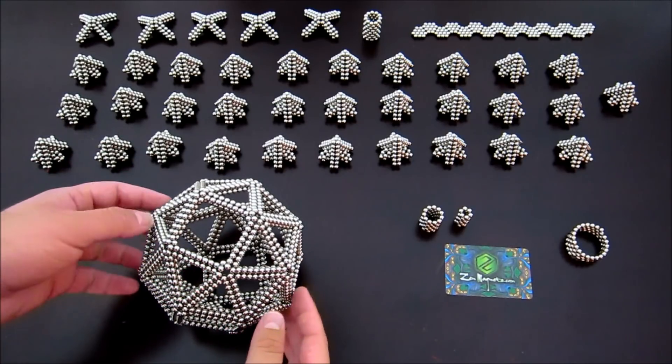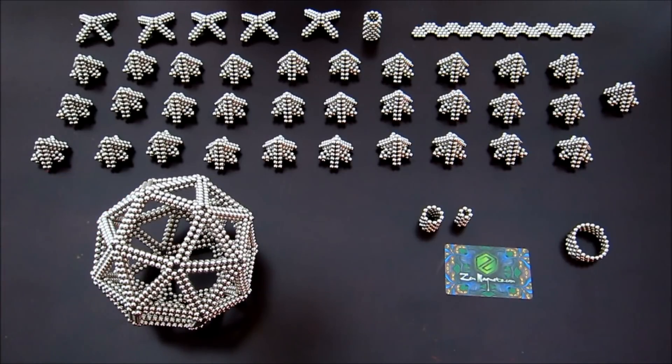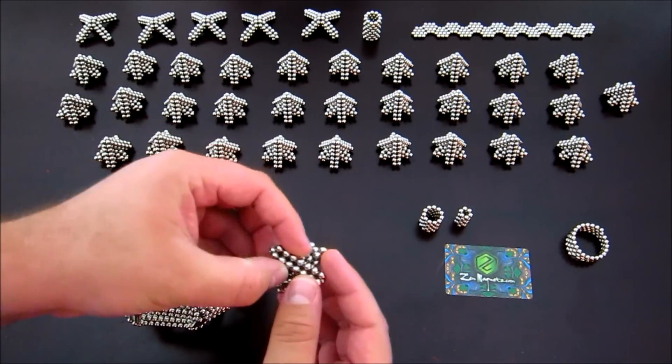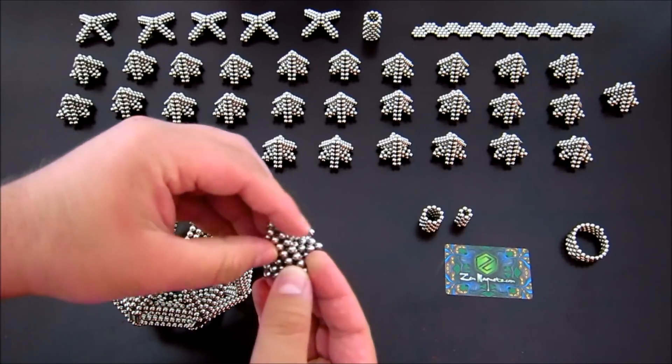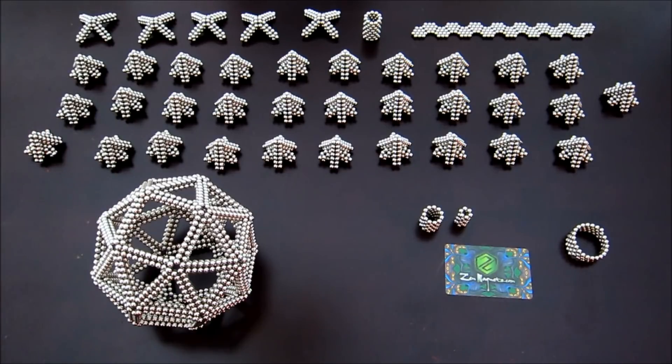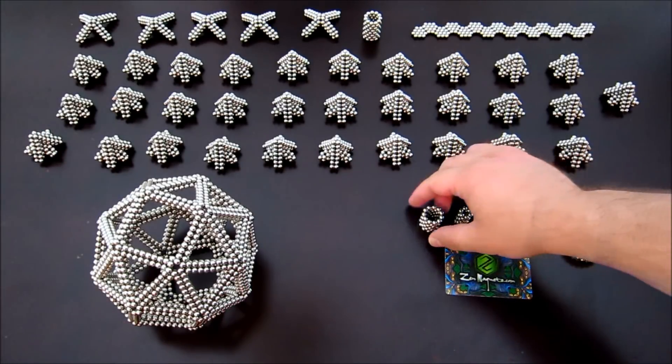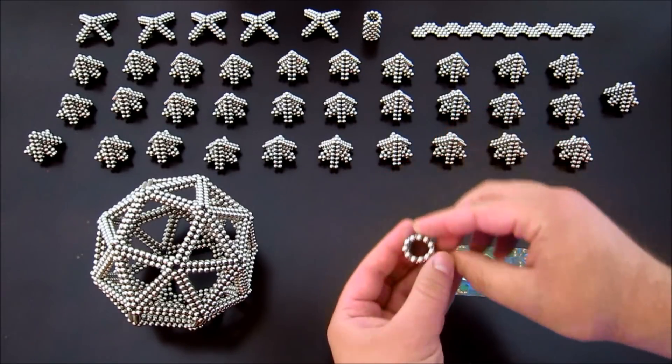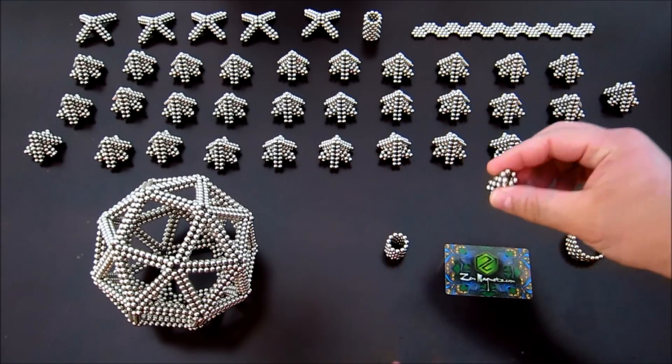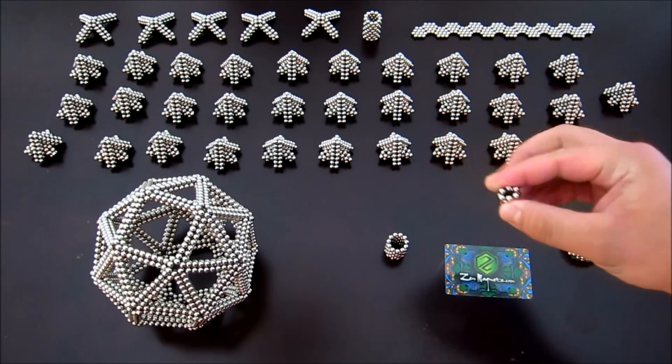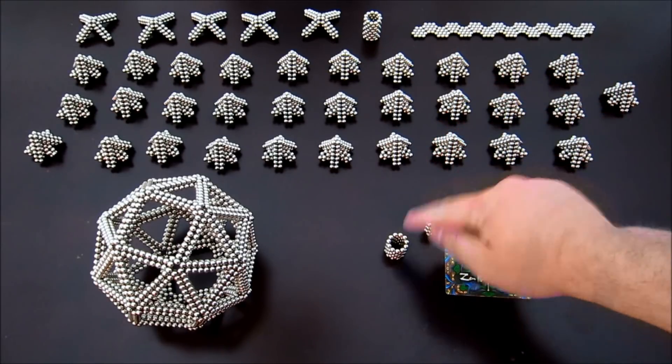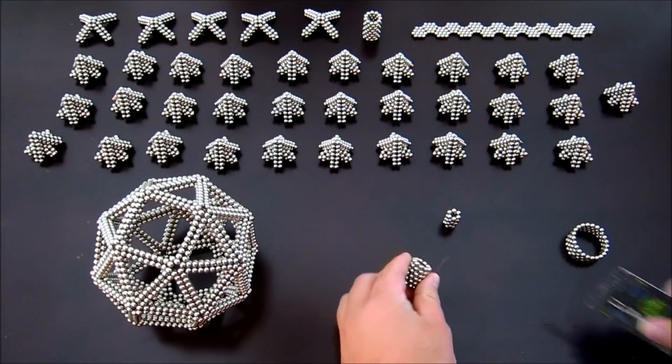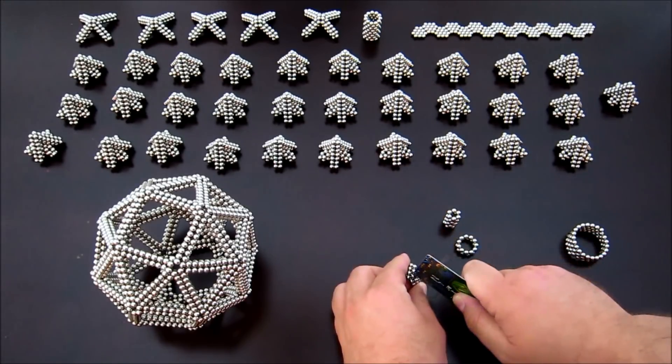So that's the first thing you need. Then you're going to need 32 of these subunits here. The way you make those is you start off with six stacked rings of 11 and six stacked rings of six. These are opposite polarities from each other.